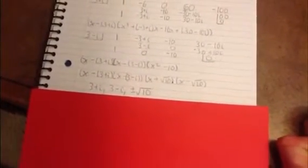Which would be 3 + i, 3 - i, positive √10, and negative √10. And those are your zeros.